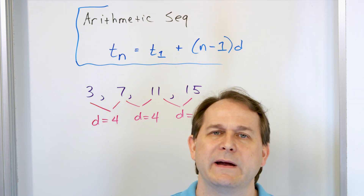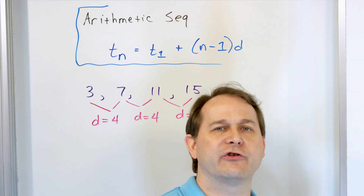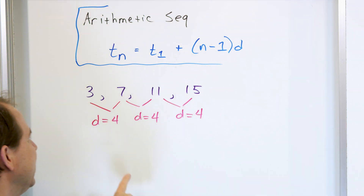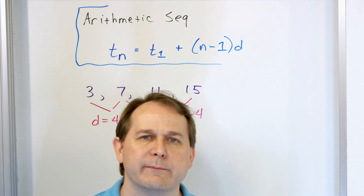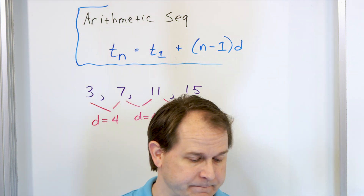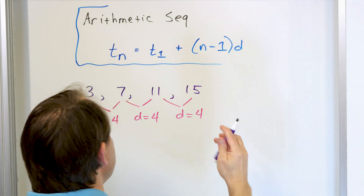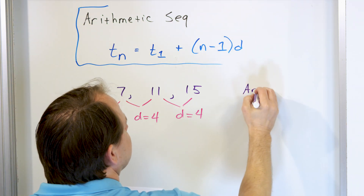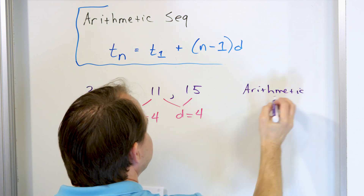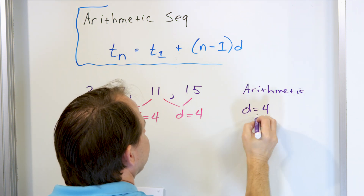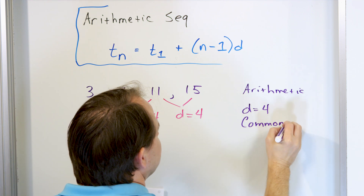Arithmetic sequences are just adding a known number to each term. To get from one term to the next, we add 4, then add 4, then add 4. That's what an arithmetic sequence is. So this is arithmetic, and d is equal to 4. This is what we call the common difference — the difference between terms that is common to every pair of terms you pick.